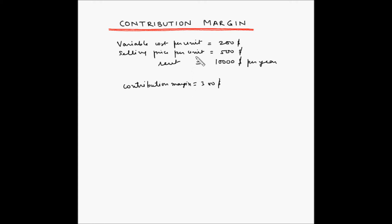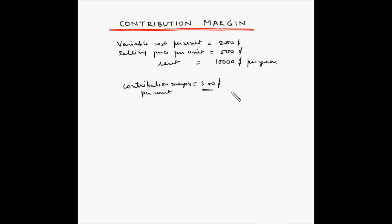Since this is for a single unit, this is the contribution margin per unit. So if you divide $10,000 by $300, you will get the number of PCs to be sold in order to cover the entire fixed cost. After the entire fixed cost has been covered, this contribution margin will become our profit. So per PC, $300 will be our profit after we have recovered the entire fixed cost.